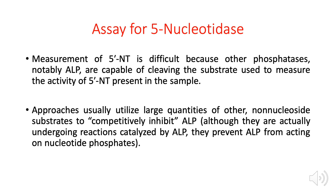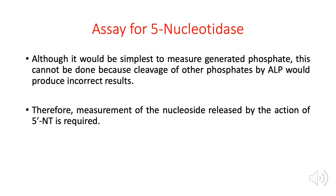Both reactions — ALP with non-nucleotide substrates and 5-nucleotidase with nucleotide substrates — produce phosphate. So instead of measuring generated phosphate, we should measure the amount of nucleosides produced. Since only 5-nucleotidase converts nucleotide substrates into nucleosides, and ALP acts on non-nucleotide substrates (producing no nucleosides), the nucleoside amount reflects only the activity of 5-nucleotidase.